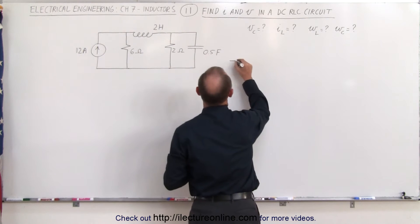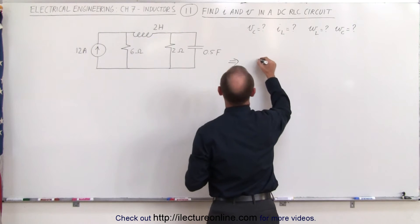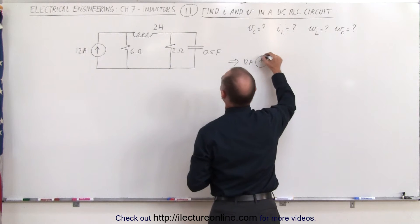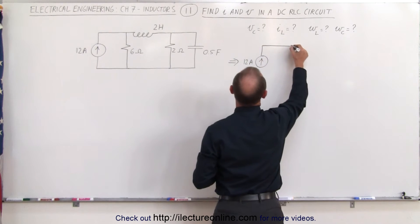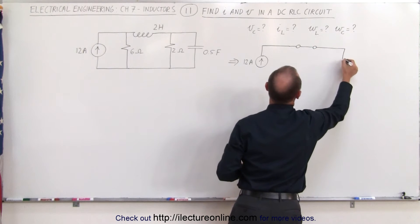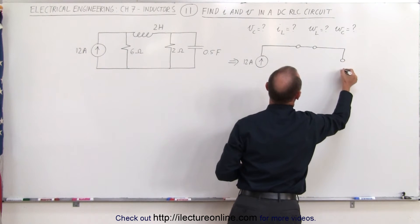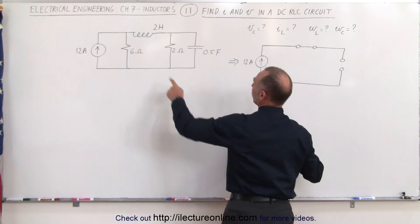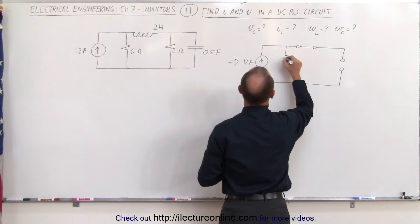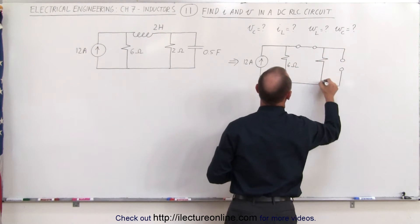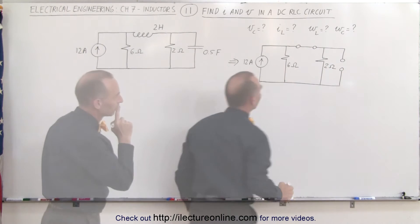So this can now be drawn as follows. We still have our 12 amp current source. The inductor becomes a short, and the capacitor becomes an open. We still have a 6 ohm resistor and a 2 ohm resistor in the circuit.